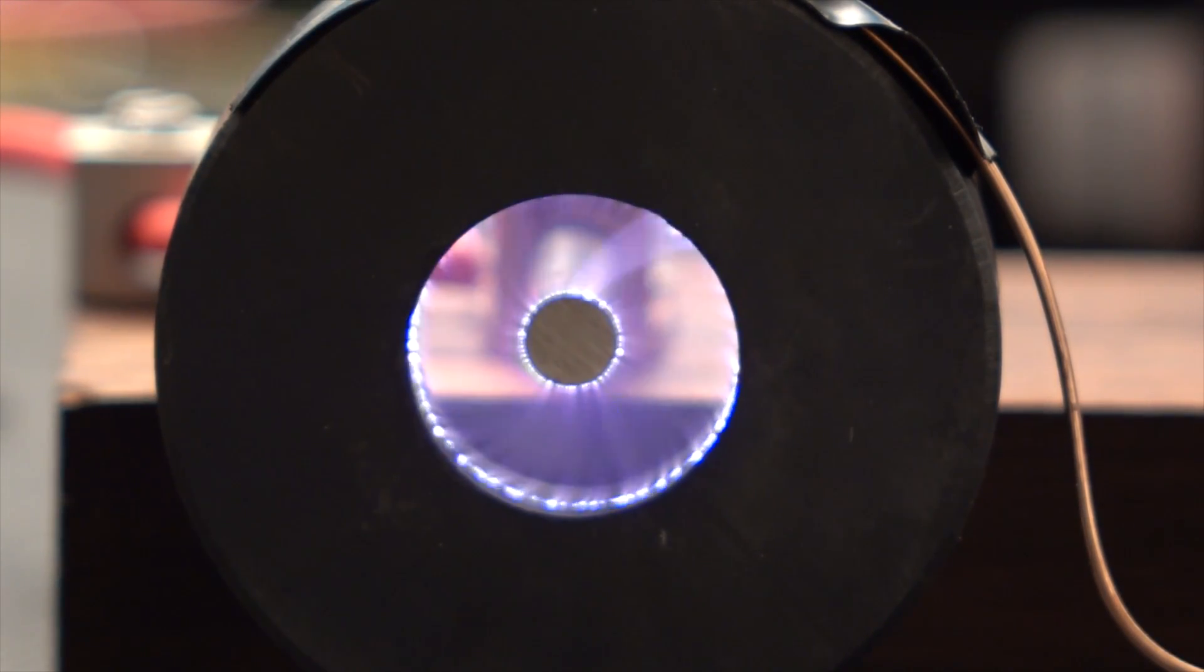We can accurately predict the direction that the arc will rotate as long as we know which side of the magnet is the north side and we know what the polarity of each of the electrodes are.